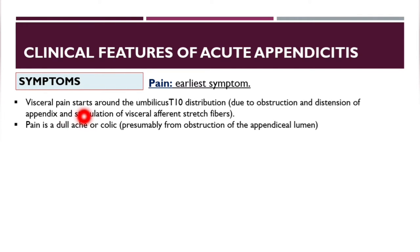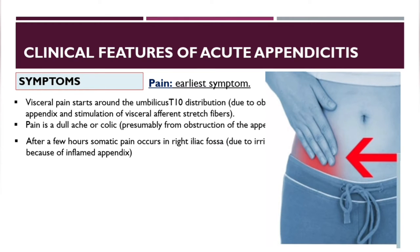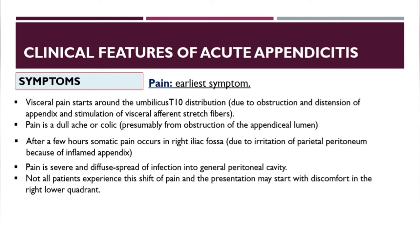Visceral pain starts around the umbilicus due to T10 distribution, caused by obstruction and distension of the appendix and stimulation of visceral afferent stretch fibers. The pain is dull, aching, or colicky. After a few hours, somatic pain occurs in the right iliac fossa due to irritation of the parietal peritoneum by the inflamed appendix — this pain is severe.